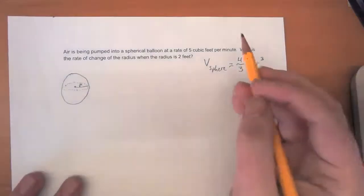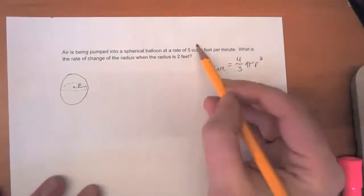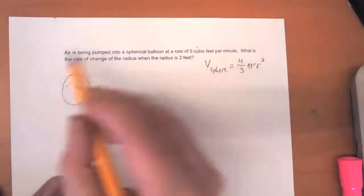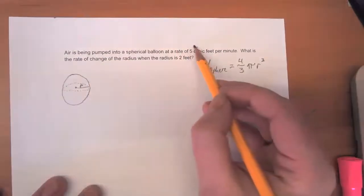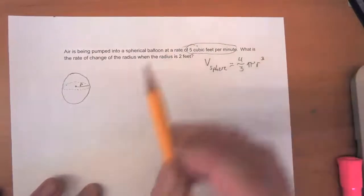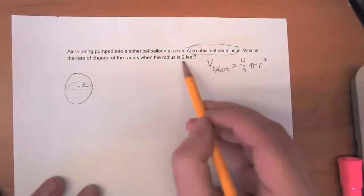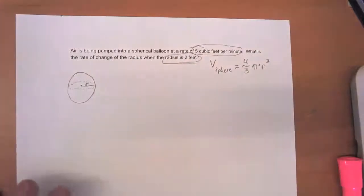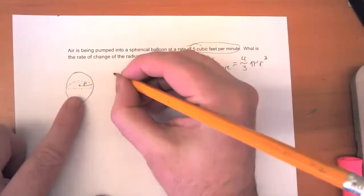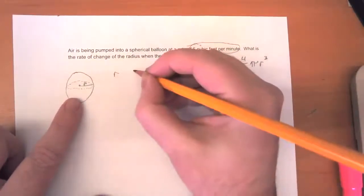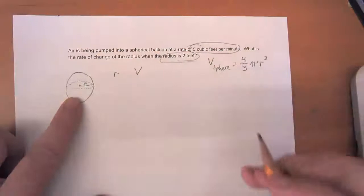What we have right now is we've got the air being pumped into the thing at five cubic feet per minute, and we have that the radius is two feet. There are two things changing when you pump air into a balloon. What are the two things that are changing? Well, the radius is changing and also the volume of the balloon is changing.